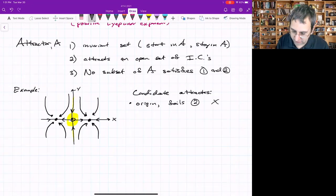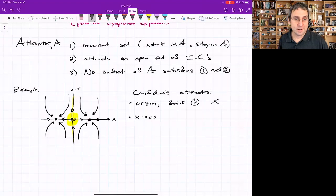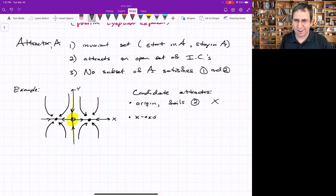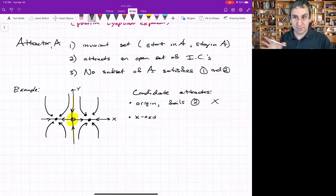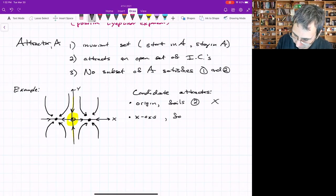It looks like the x-axis is pretty good. Everything is going to the x-axis. In this case, y dot equals negative some positive number times y. So that means everything is going to the x-axis. It satisfies one, it's an invariant set. It satisfies two because an open set of initial conditions ends up on the x-axis. But there is a subset of the x-axis that is attracting, so it actually fails three.